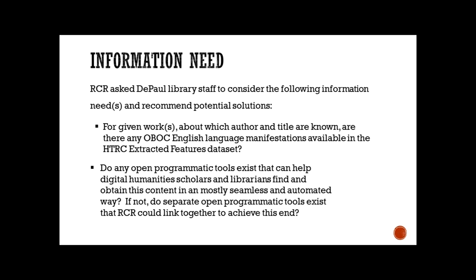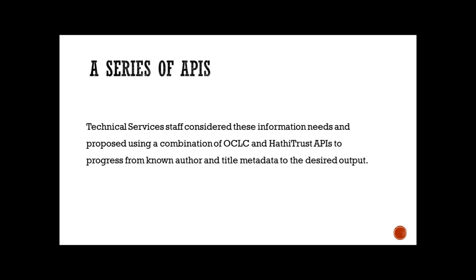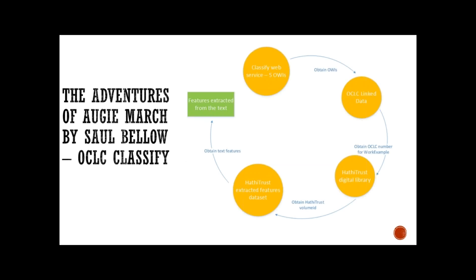Technical services staff here at DePaul considered these information needs and proposed using a combination of OCLC and HathiTrust APIs to progress from known author and title metadata to the desired output. Consider the example of The Adventures of Augie March by Saul Bellow. Author and title information can be sent through an HTML GET request to OCLC's Classify API to retrieve OCLC work identifiers, or OWIs, for each identified work in the OCLC system.